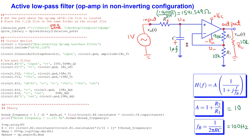Consider the active low pass filter with the op-amp in non-inverting configuration. The values of the components are chosen such that the break frequency is 100 Hz and the filter gain for low frequencies is 10. We include the 741 op-amp model in the circuit netlist and define its path. Using descriptive node labeling, we translate this circuit into a netlist, and we also program the theoretical transfer function.